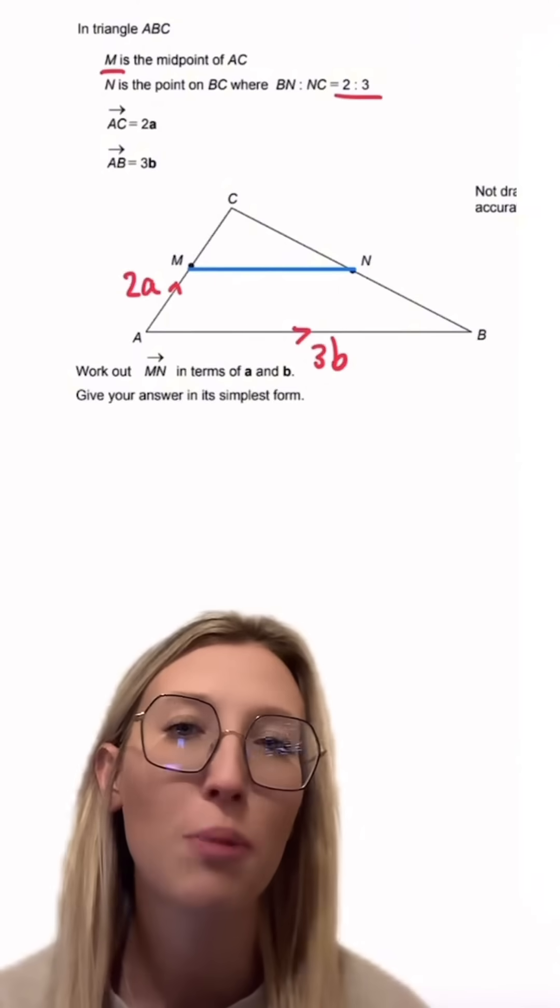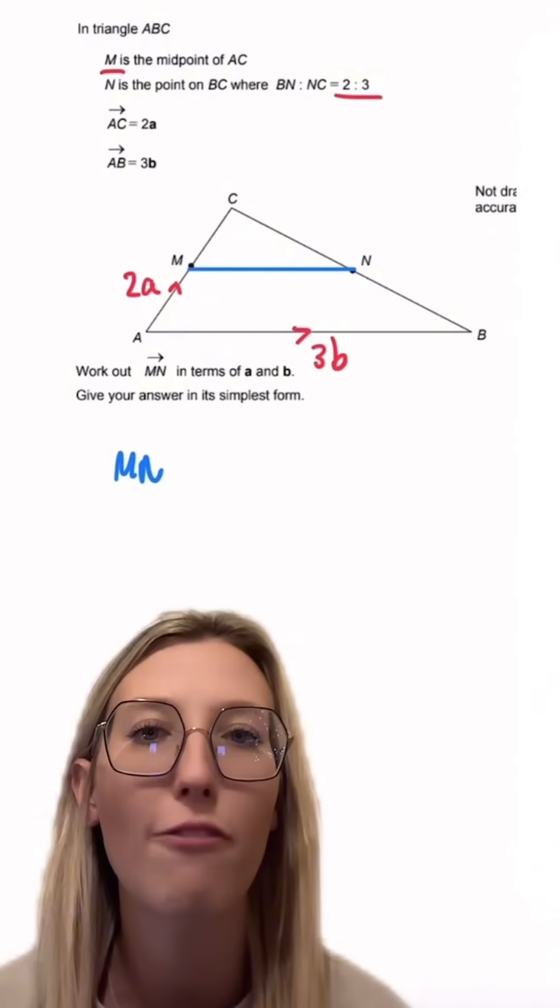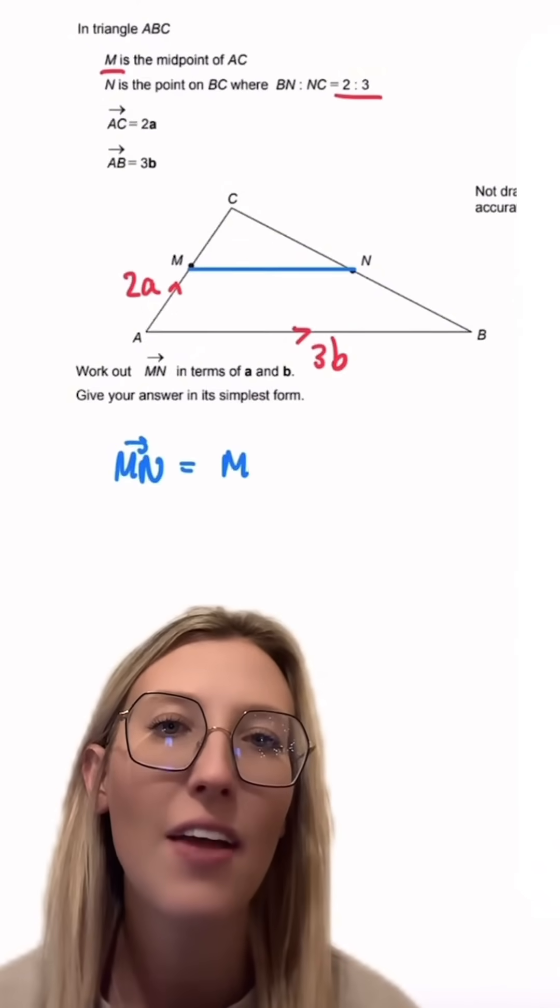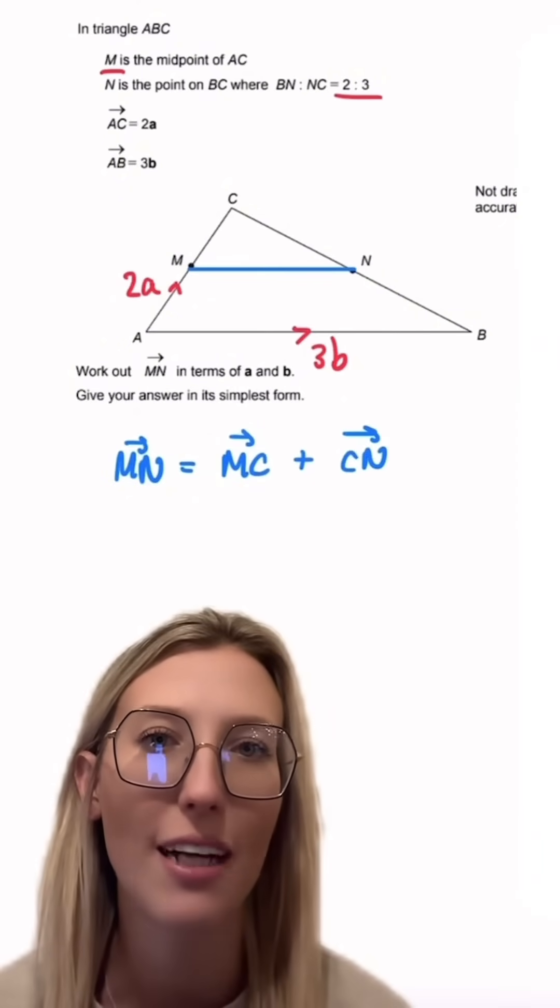Now let's find a way from getting from M to N. We can do this by going from M to C and then adding in C to N. So we just need to find these two vectors here.